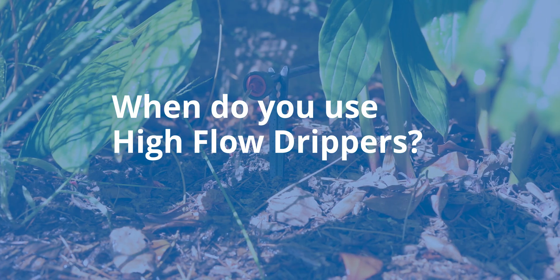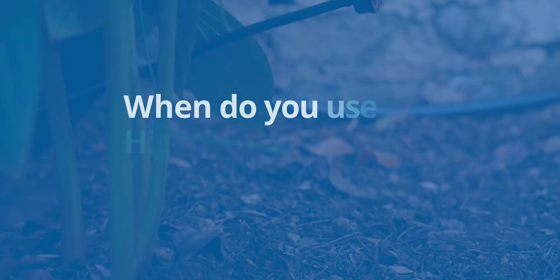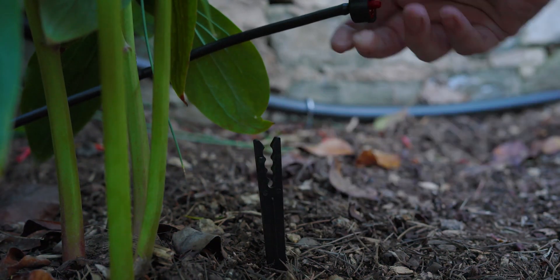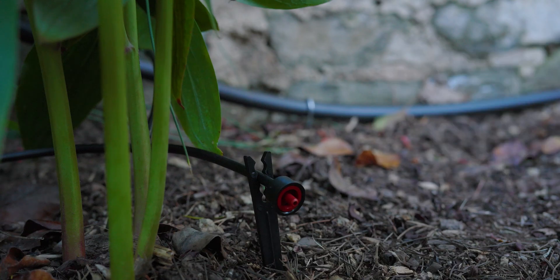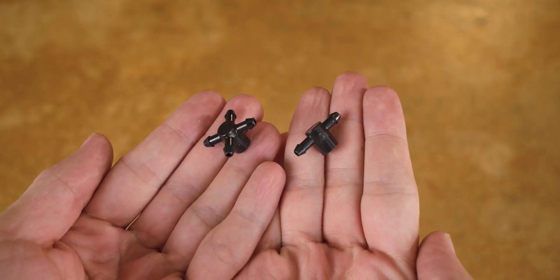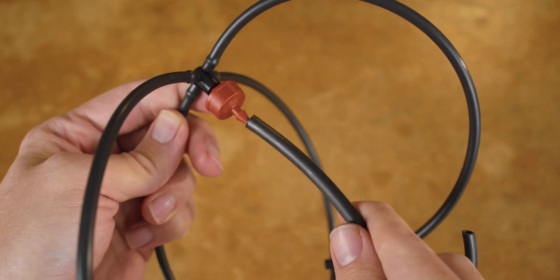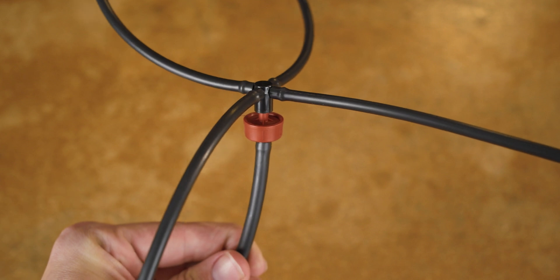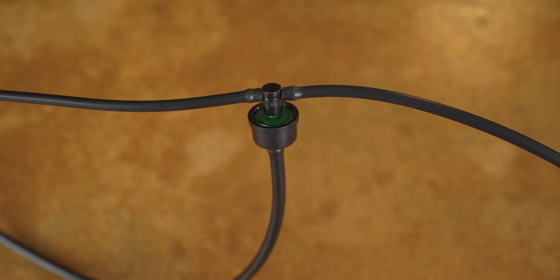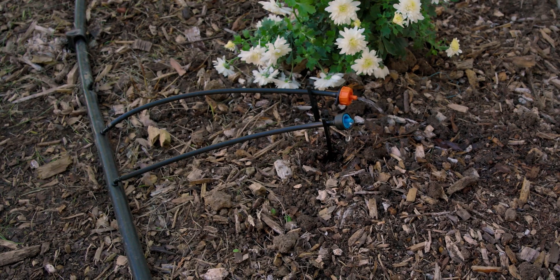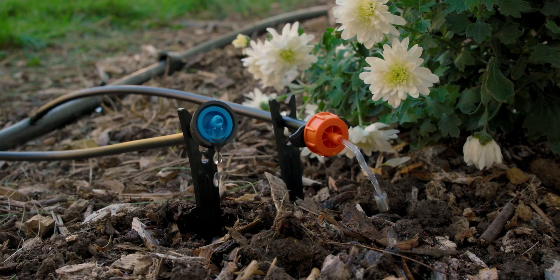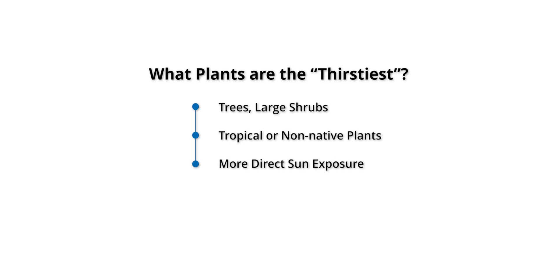So what are high flow drippers used for? In commercial landscaping, we often see fewer high flow emitters installed to save labor time on the installation. High flow emitters are also used in nurseries and indoor commercial grows, where they connect to a multi-outlet manifold to essentially split the flow so that a single dripper can water multiple plants. For the home gardener, there are some uses for higher flow emitters — like on thirsty plants that are on the same zone as plants with lower watering requirements. These plants could be thirstier because they're a tree, large shrub, a tropical or non-native plant, or because they experience more direct sun exposure throughout the day, so the soil they grow in dries out much faster.